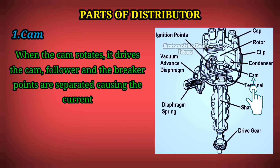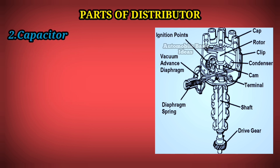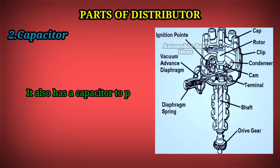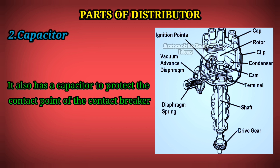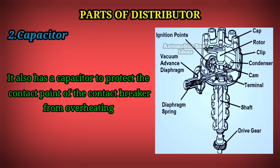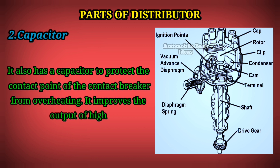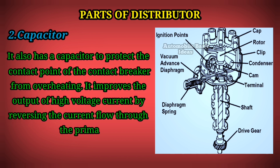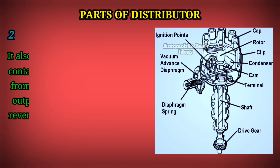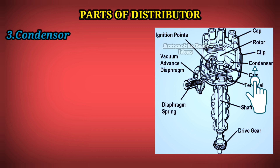2. Capacitor: It also has a capacitor to protect the contact point of the contact breaker from overheating. It improves the output of high voltage current by reversing the current flow through the primary coil.